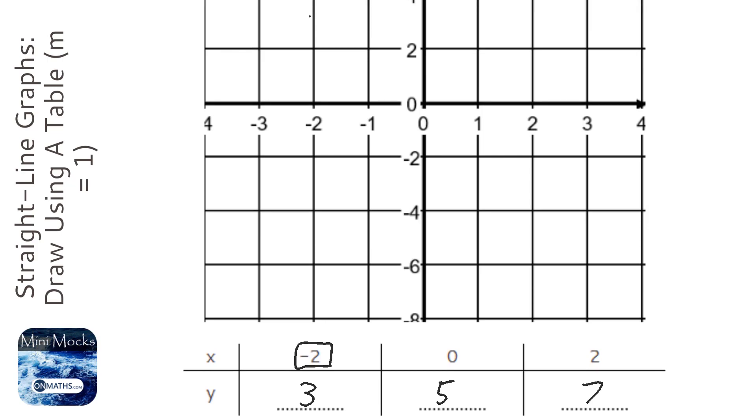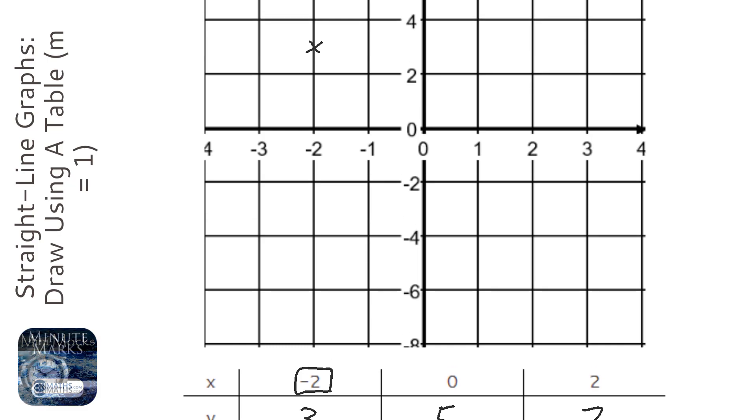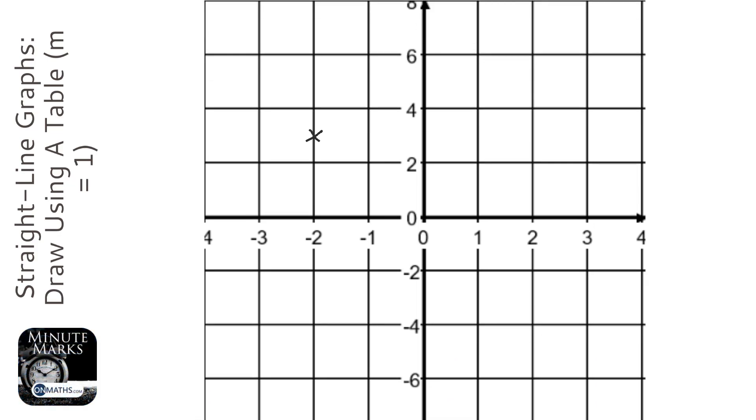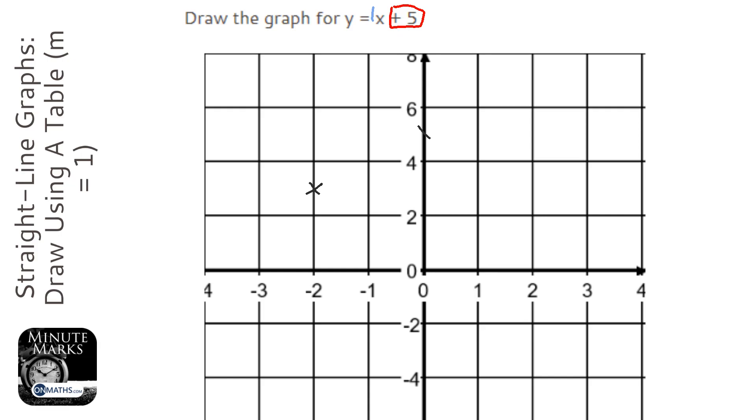So -2 is at 3, which is halfway between 2 and 4, and then we've got 5, and then we've got 2 at 7, which is halfway between 6 and 8. Now we're going to join them up with a straight line.